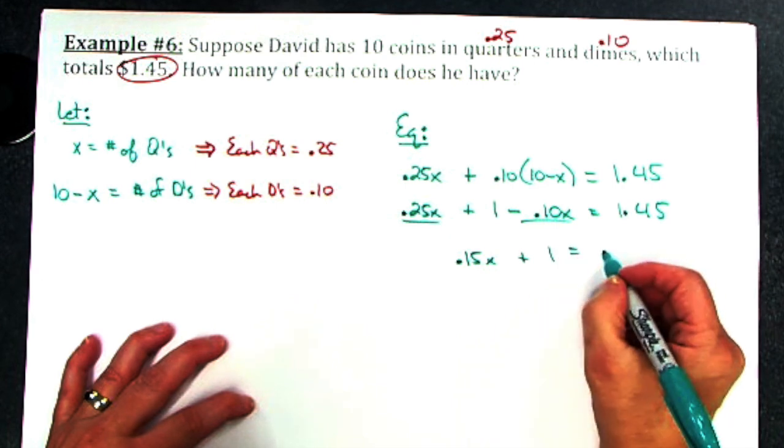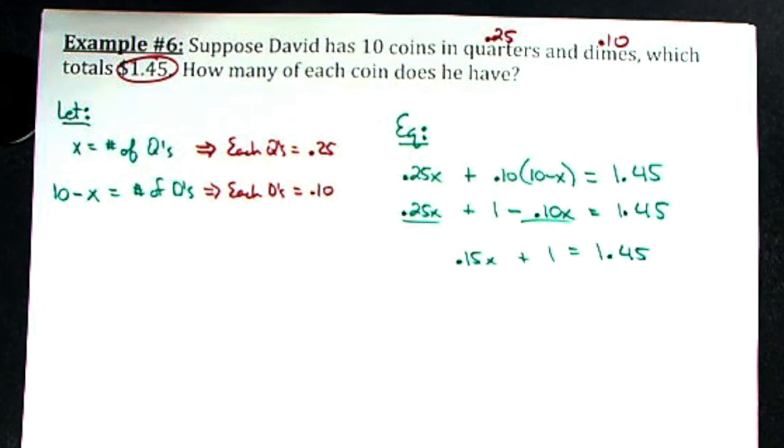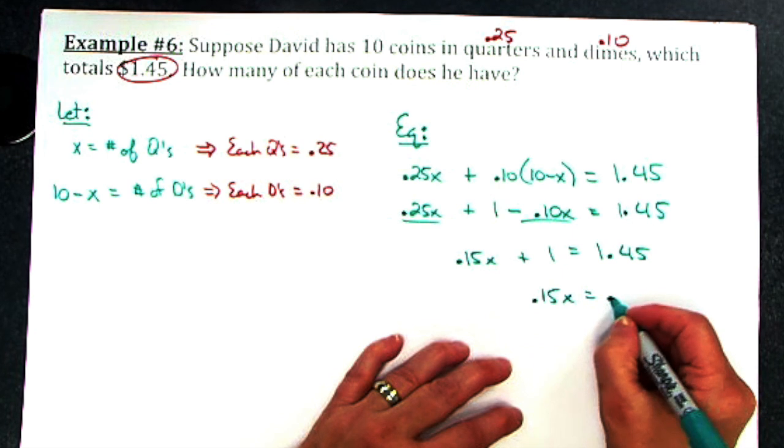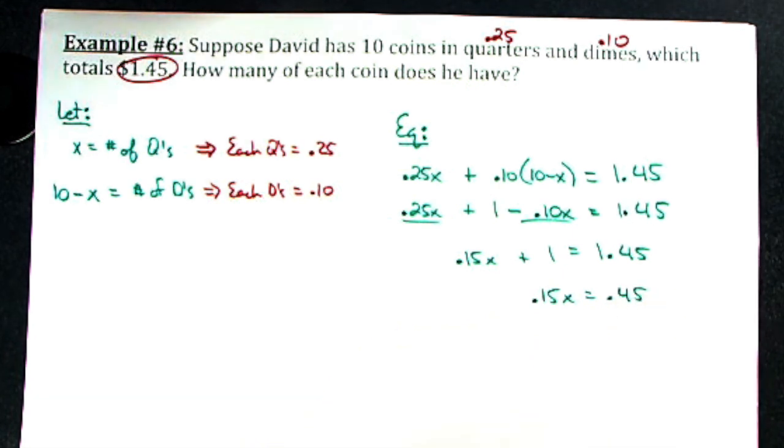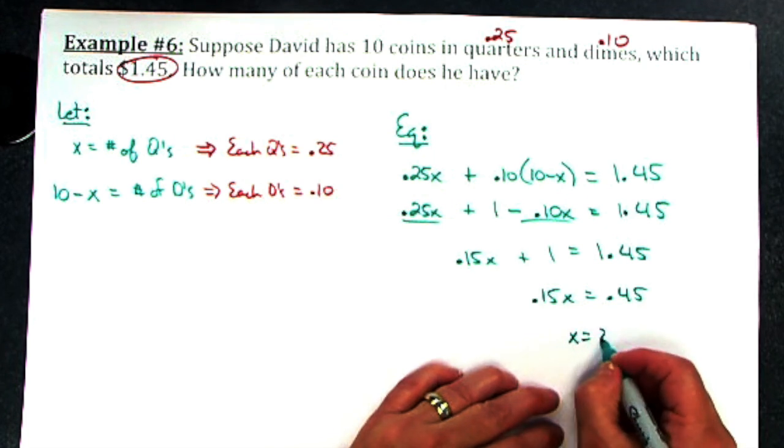Plus the one equals a dollar and 45 cents. Subtract one, so 0.15x equals 0.45. Divide both sides by that 0.15, it's going to give me x equals 3.